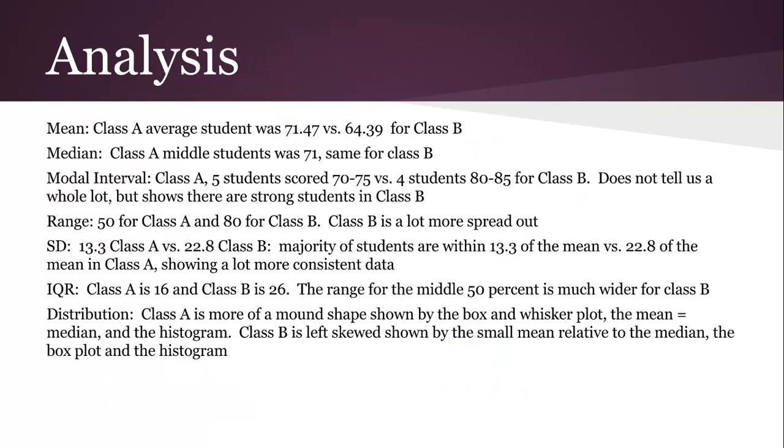Without looking at the outlier, though, this is basically what we're looking for for the analysis. We'll just go through each one of these lines. The big thing is that you tell me what is the average for both, what is the mean for both, what do they mean, and then some kind of conclusion there. For class A, the average student was 71.47, which is higher for class A than class B. The median, the middle student, was the same for class A and B. The modal interval: five students scored 70 to 75, four students scored 80 to 85 for class B. It doesn't tell you a whole lot, but it shows there are strong students in class B, even though the average is a lot lower.